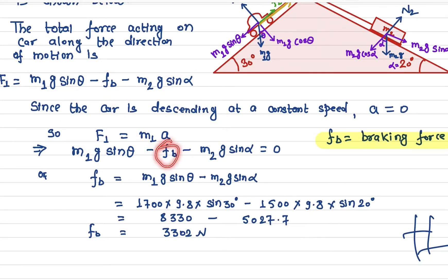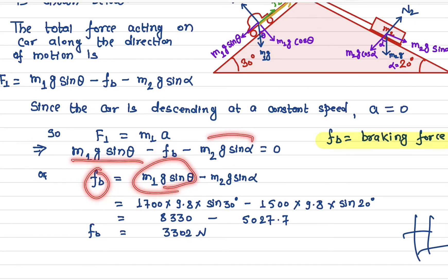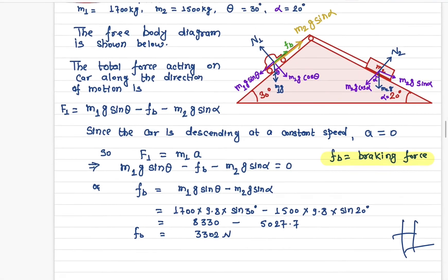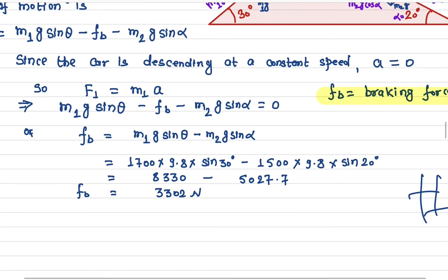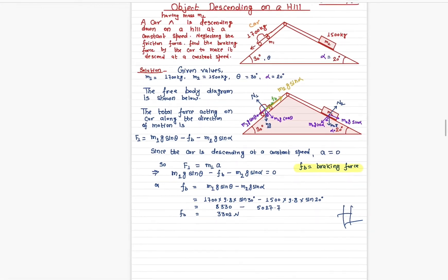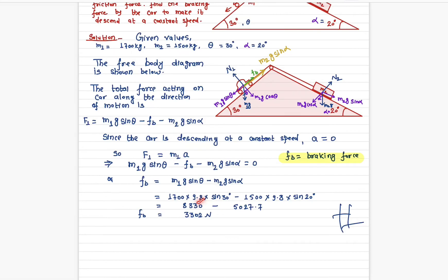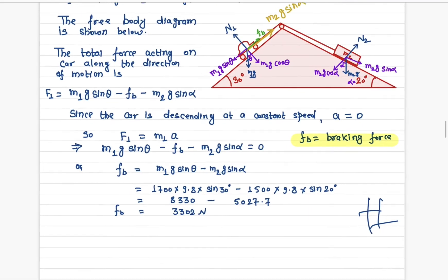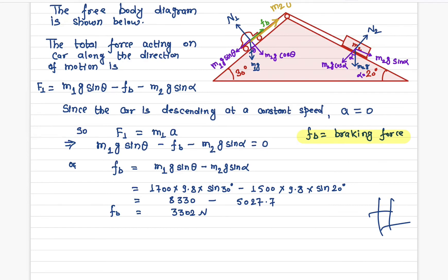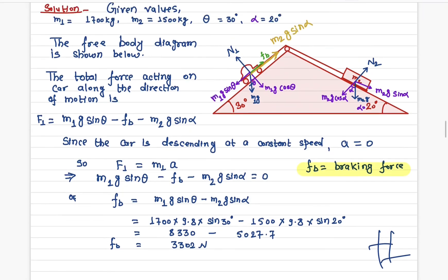Solving for the braking force Fb: Fb equals m1g sine theta minus m2g sine alpha. Plugging in the values: m1 is 1700 kg, g is 9.8, theta is 30 degrees, m2 is 1500 kg, g is 9.8, and alpha is 20 degrees. The braking force required to make the car descend at a constant speed is 3300 newtons.